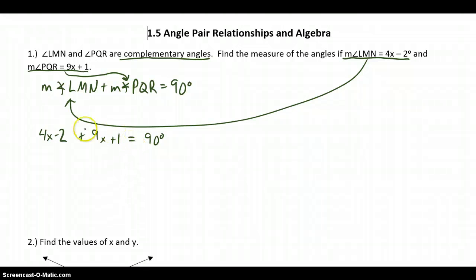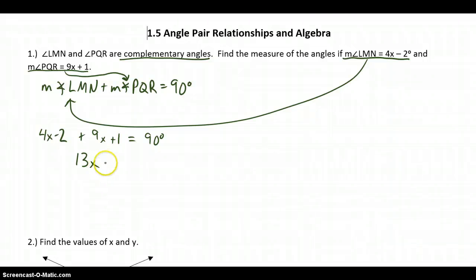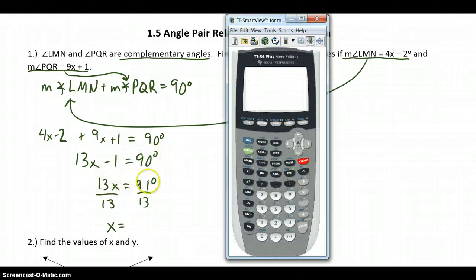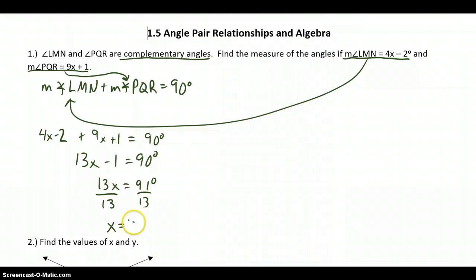After I've substituted, I can do my algebra and solve for x. Combining like terms, negative 2 plus 1 gives me negative 1. Add 1 to both sides, then divide both sides by 13.